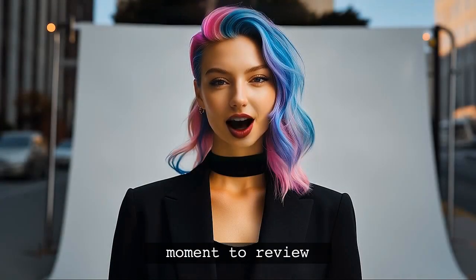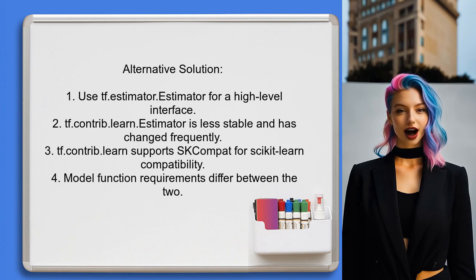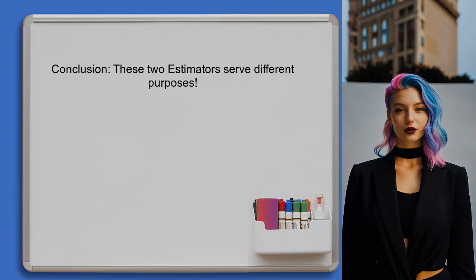Another user points out that tf.estimator.estimator is considered a high-level interface and is the recommended option. In contrast, tf.contrib.learn.estimator is seen as less stable and has undergone significant changes over time. They also highlight that using tf.contrib.learn allows for compatibility with scikit-learn, which is not possible with tf.estimator.estimator. Additionally, the requirements for the model function differ between the two, leading to potential confusion.